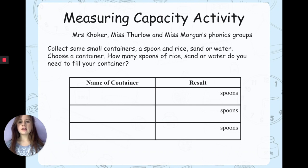Now if you are in Mrs. Coker, Miss Furlow, or my phonics group, Miss Morgan's phonics group, can you get your small containers, your spoon and your rice, sand or water? What you're going to do is choose a container and write it down in the name of container section of the table. And then you are going to see how many spoons of rice, sand or water you need to fill the container. So just like we were with the other containers and the beakers, you are going to put rice, sand or water on your spoon and fill your containers to see how many spoons you need. Pause the video if you are in Mrs. Coker, Miss Furlow, or my phonics groups. This is your activity for today.